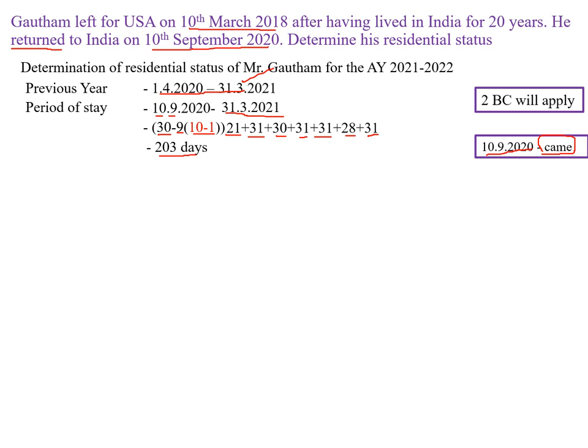After calculating 203 days, compare this with the basic condition. The first basic condition is 182 days or more during the previous year. This person has stayed for 203 days, so he is satisfying the first basic condition. As he has satisfied the first basic condition, there is no need to check the second condition — satisfying one basic condition is enough.